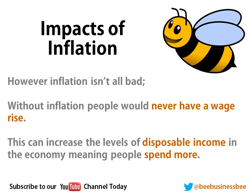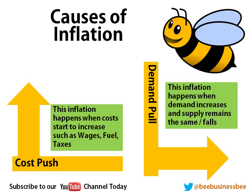So what actually causes inflation? There are two causes: cost-push inflation and demand-pull inflation. Cost-push inflation is when costs start to increase — such as wages, fuel, or taxes — and they push up the price of products. Typically the most common one is fuel: the price of oil goes up and that pushes the cost of most products up. Demand-pull inflation happens when demand increases for a product and supply either remains the same or starts to fall. When you increase demand you can naturally increase the price, and companies can control this if they get supply and demand right within the market.